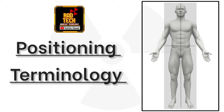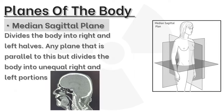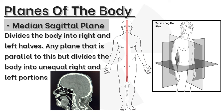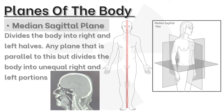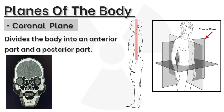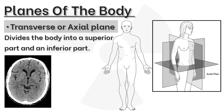Positioning terminology — planes of the body. Three planes of the body are used extensively for descriptions of positioning, both in plain film imaging and in cross-sectional imaging techniques. The planes described are mutually at right angles to each other. The median sagittal plane divides the body into right and left halves; any plane parallel to this divides the body into unequal right and left portions. The coronal plane divides the body into an anterior part and posterior part. The transverse or axial plane divides the body into a superior part and an inferior part.